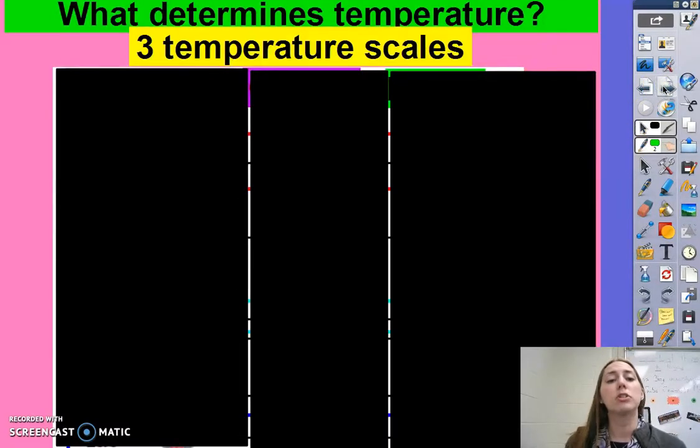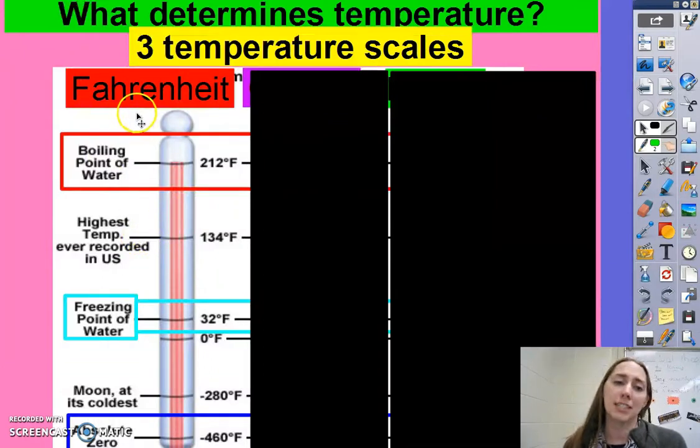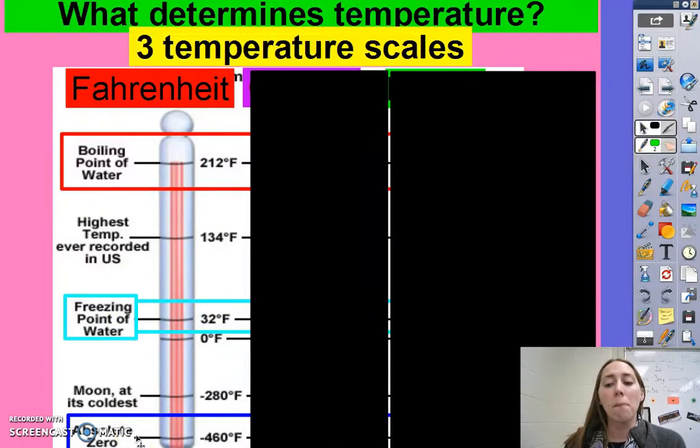So when we're talking about temperature in terms of numbers, there are three temperature scales that we use. The one you're most familiar with is the Fahrenheit scale, which we use in the United States. Boiling point of water is 212 degrees Fahrenheit, freezing point is 32 degrees Fahrenheit, and absolute zero, which is the point at which all molecular motions stop, so that kinetic energy of the particles moving around as they cool down, they slow down until they reach absolute zero and stop. That's negative 460 degrees Fahrenheit.